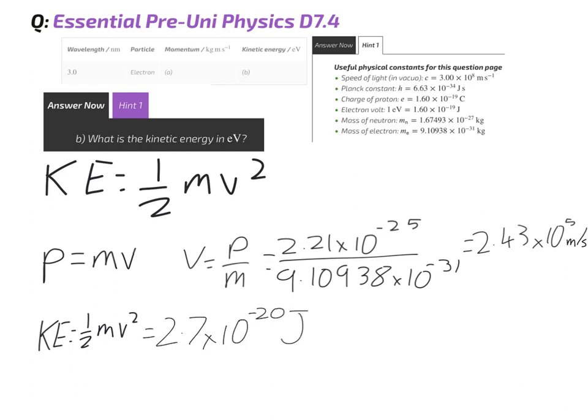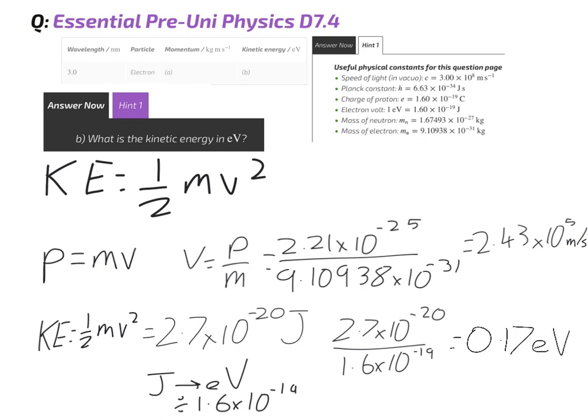We need our answer in electron volts. So, to go from joules into electron volts, we are going to divide by 1.6 times 10 to the power of minus 19. This gives us 2.7 times 10 to the power of minus 20 joules over 1.6 times 10 to the power of minus 19. And we get an answer of 0.17 electron volts. Put that into Isaac's Physics and you should get the right answer.